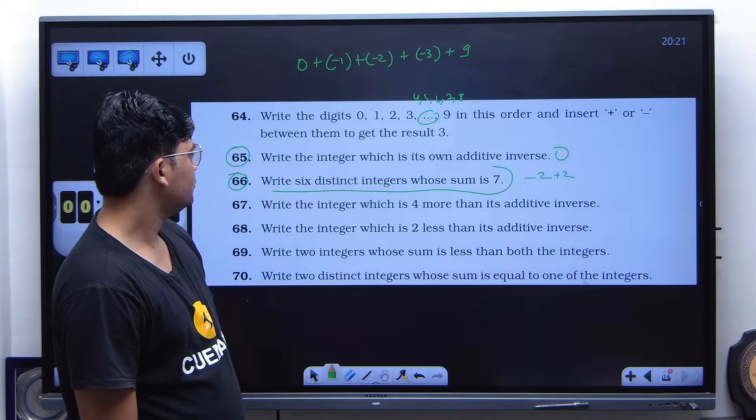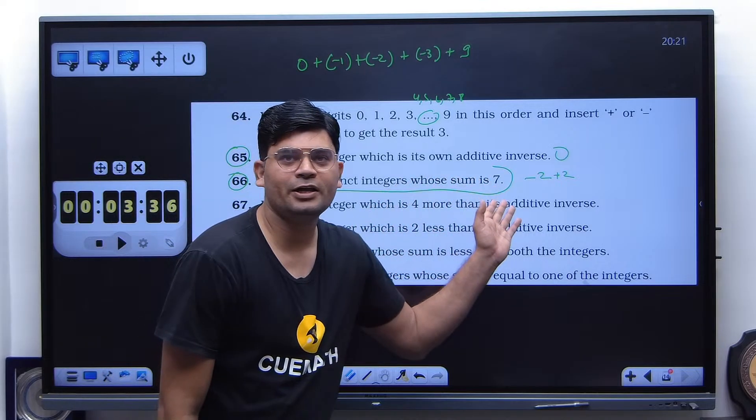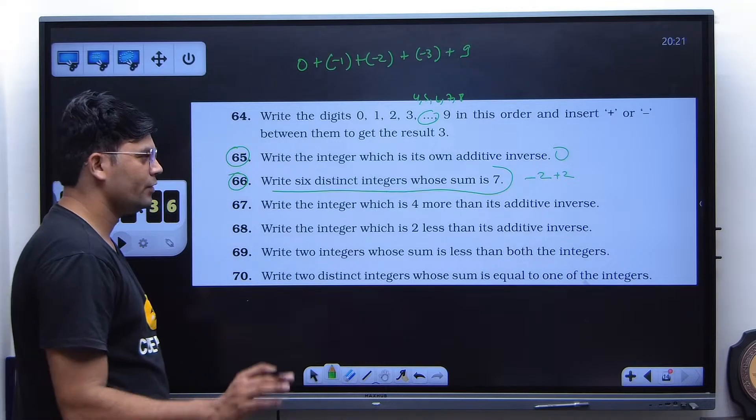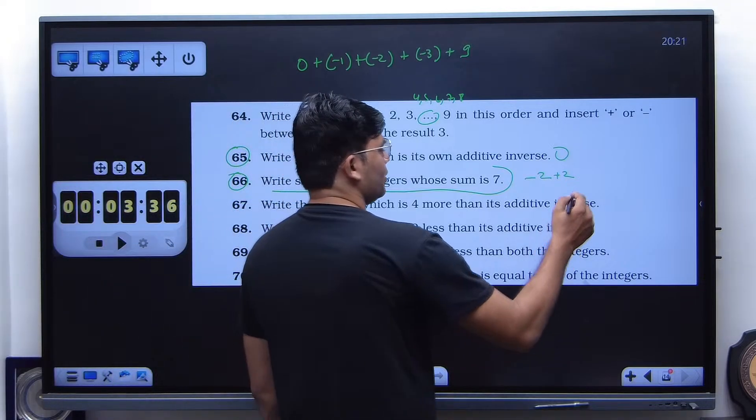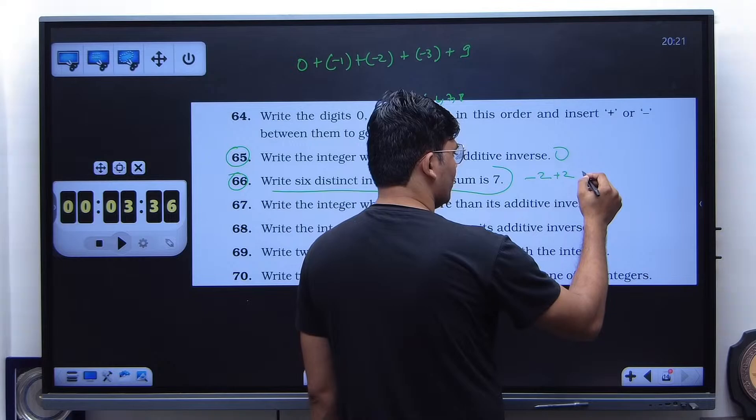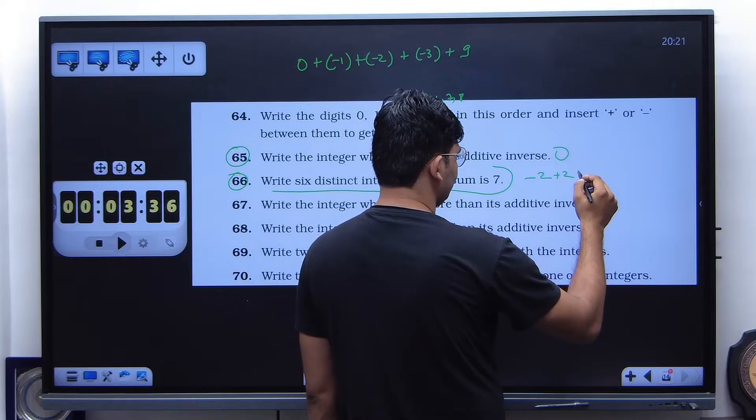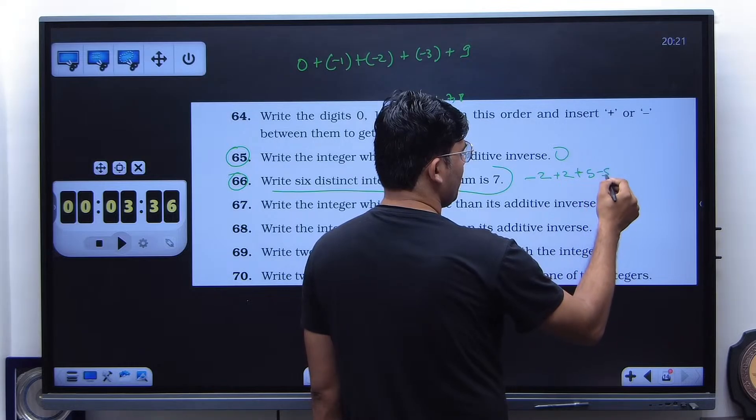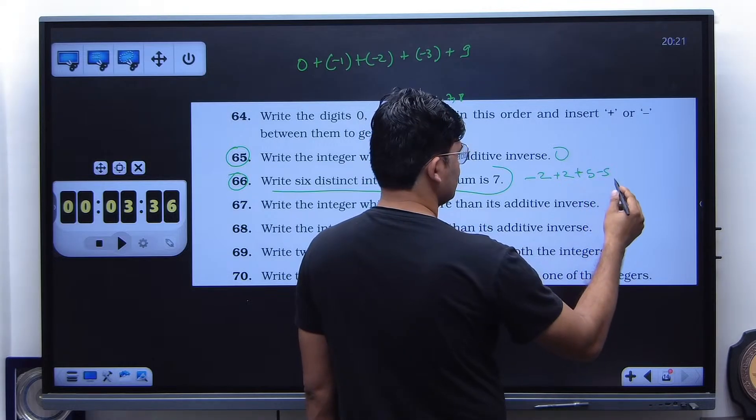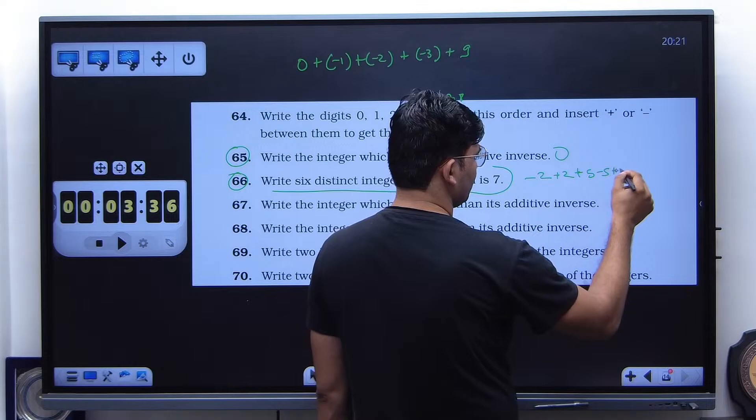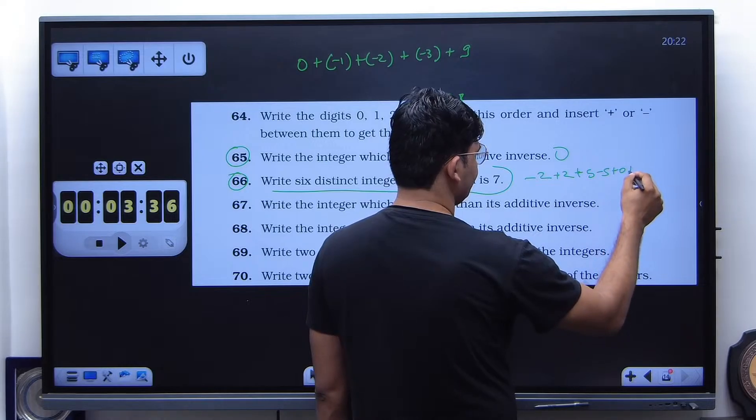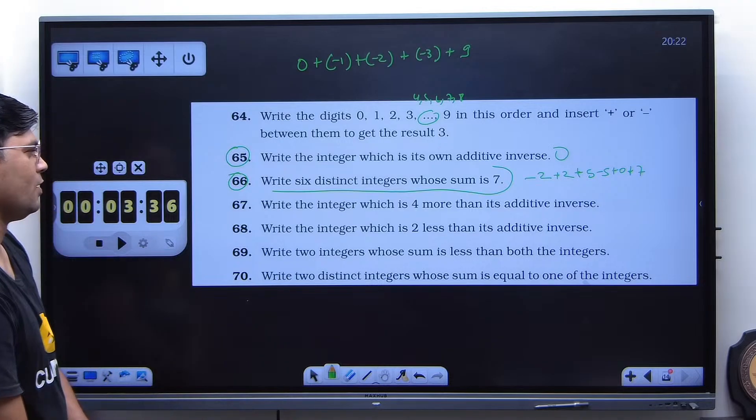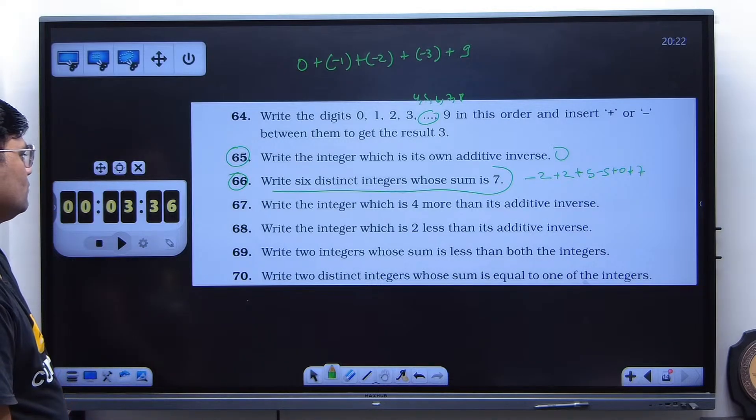Minus 2 plus 2. Plus minus 5. Plus 5 minus 5. Yeah. Plus 0 plus 7. 67 is 2. 2, 2. Write the integer which is 4 more than its additive inverse.